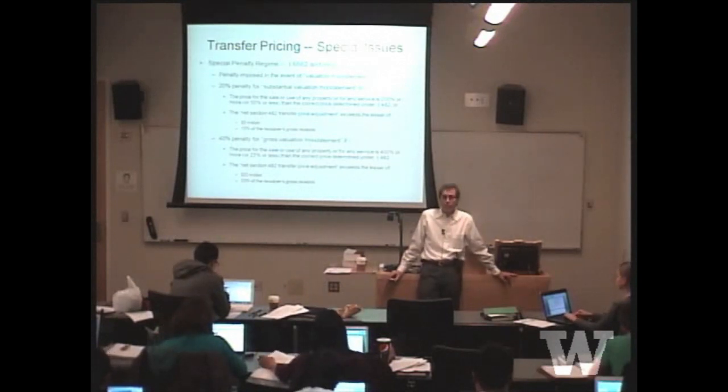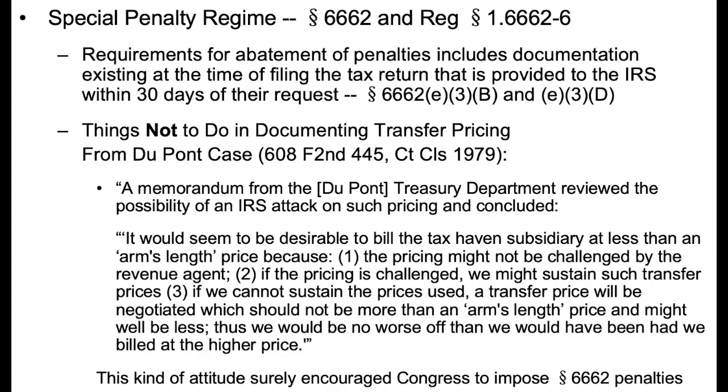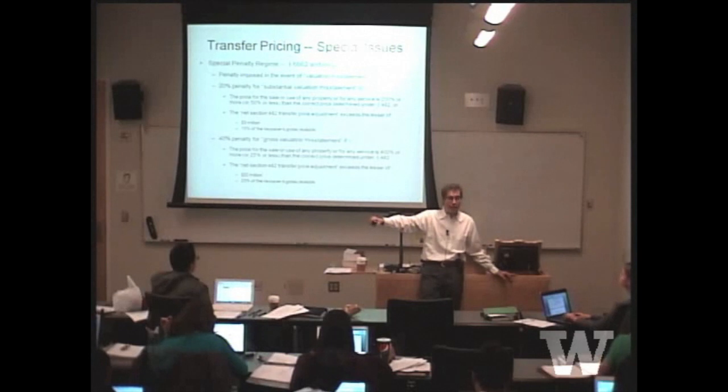But a good example of what not to do is to look at what I believe it was the DuPont case, where the planners from the tax department said there's absolutely no downside to just pushing the price as far as we can to maximize how much goes into our Swiss distribution company and how little goes into our manufacturing operation in the United States.